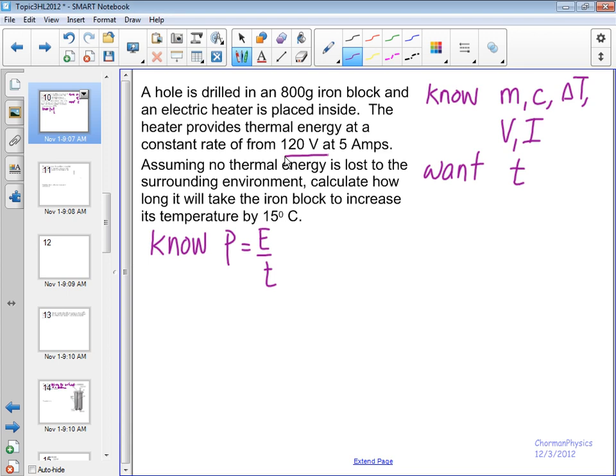And you should remember this hopefully from electricity and magnetism. So we know that the power being delivered - current times voltage, five amps times 120 volts, 600 watts.